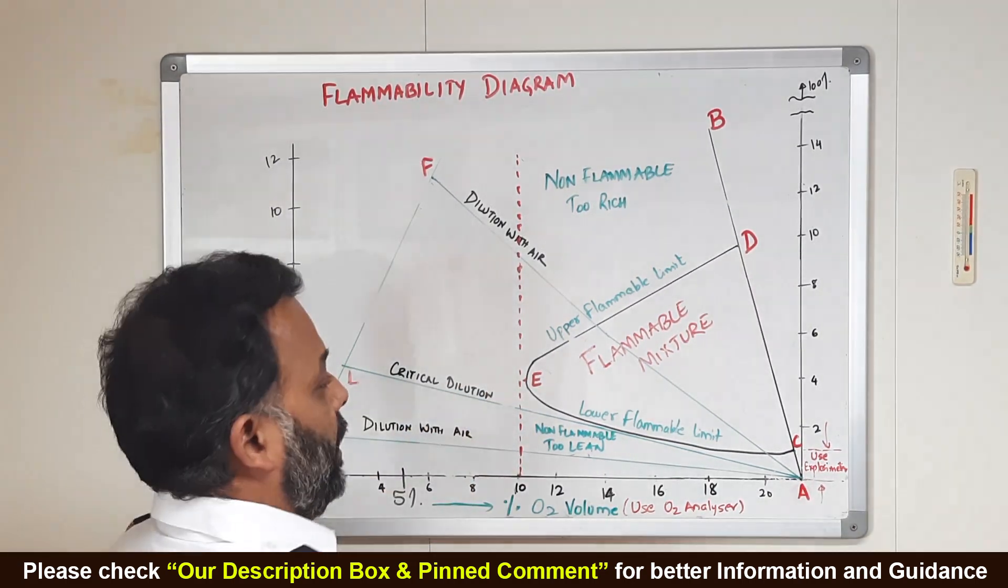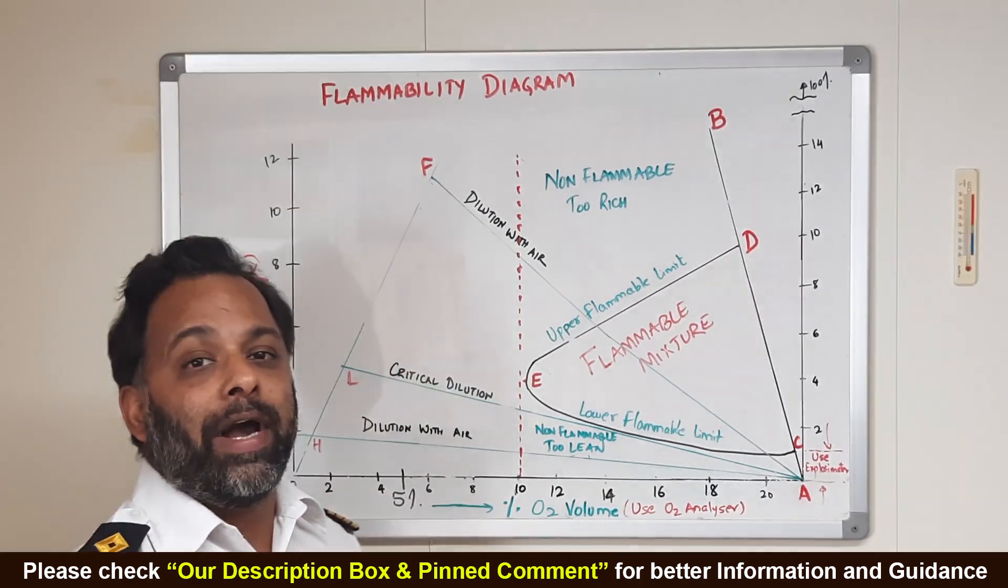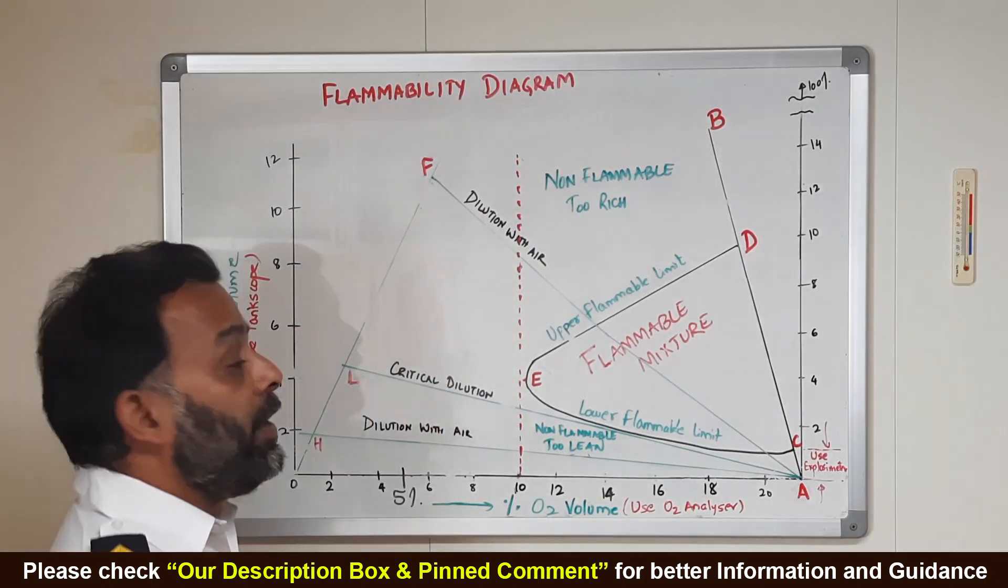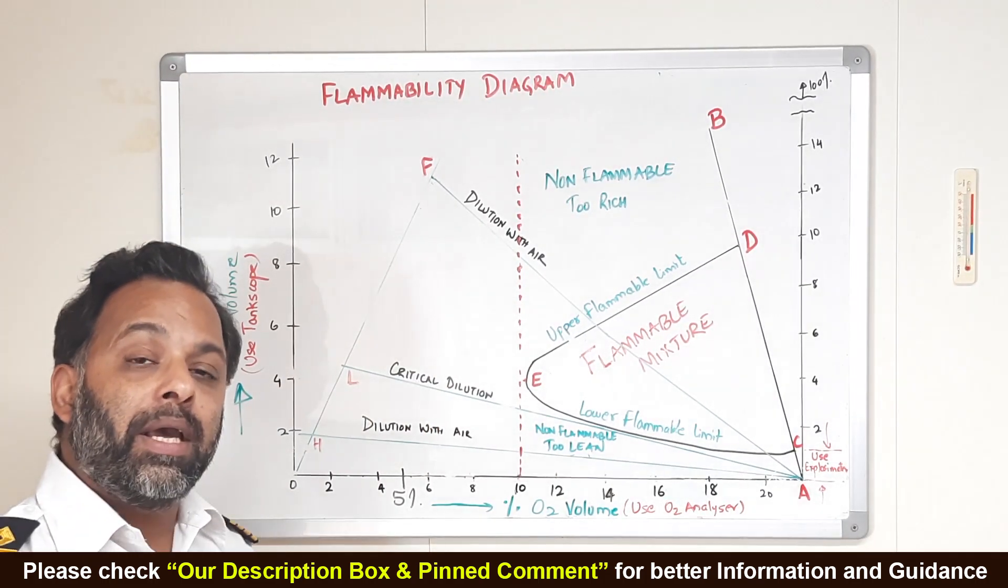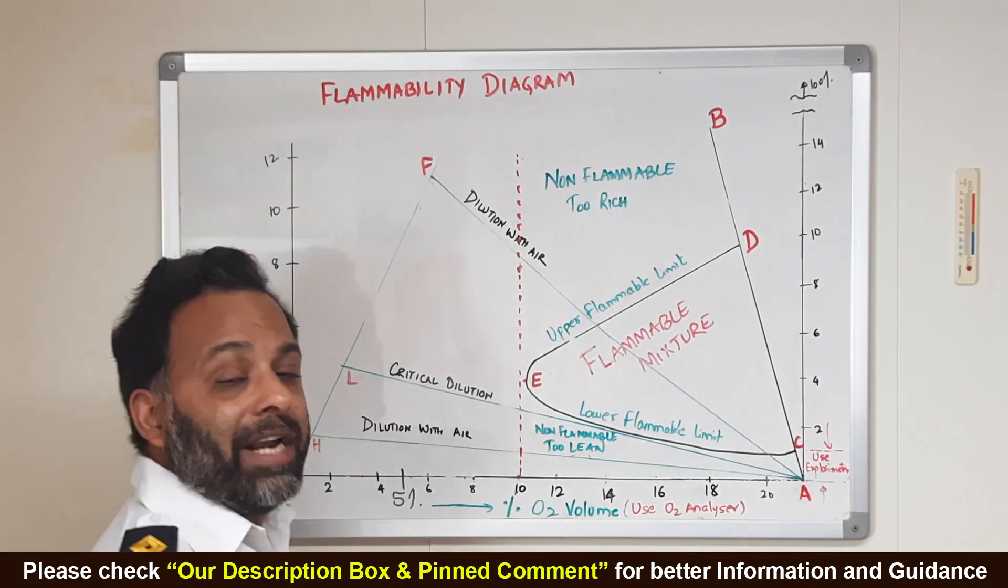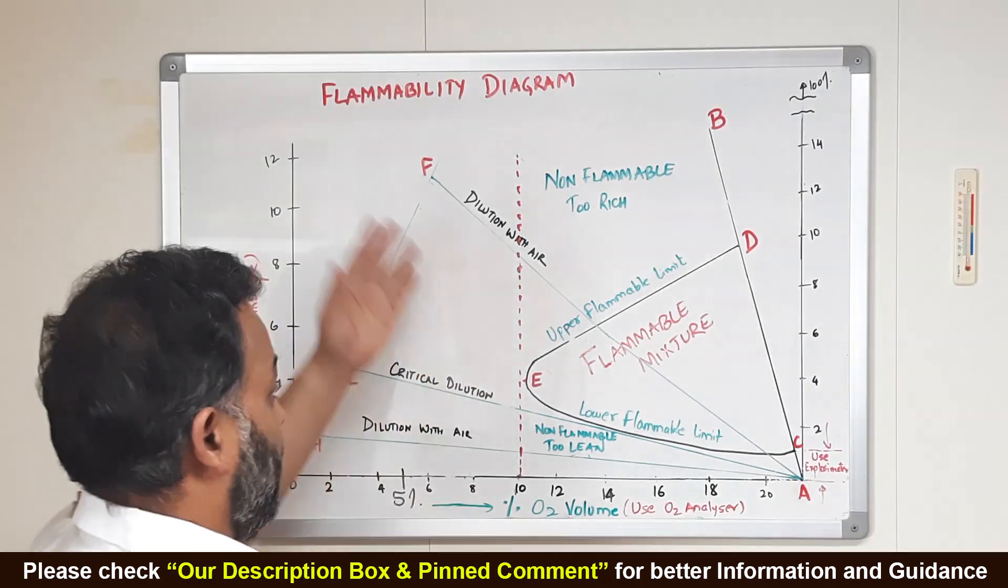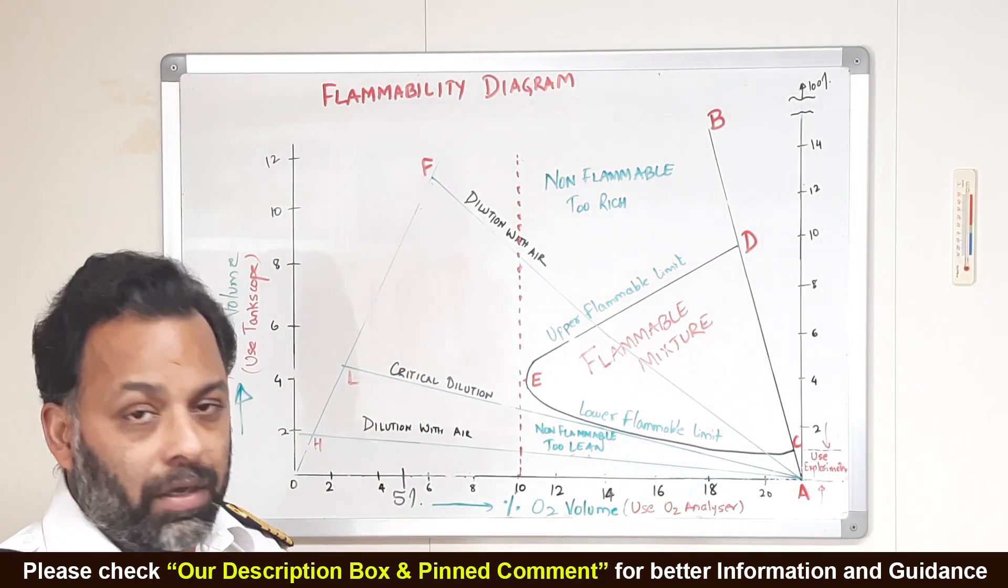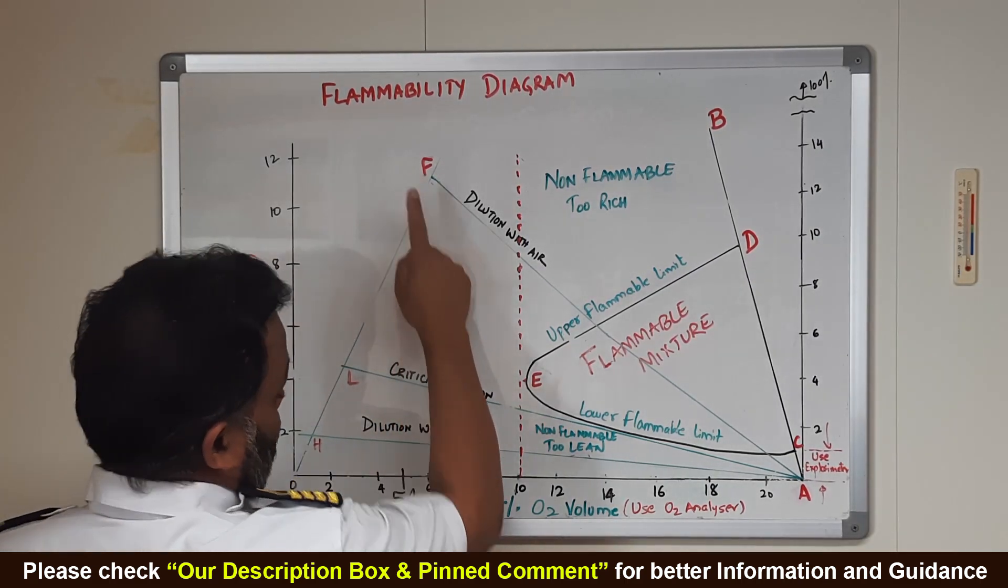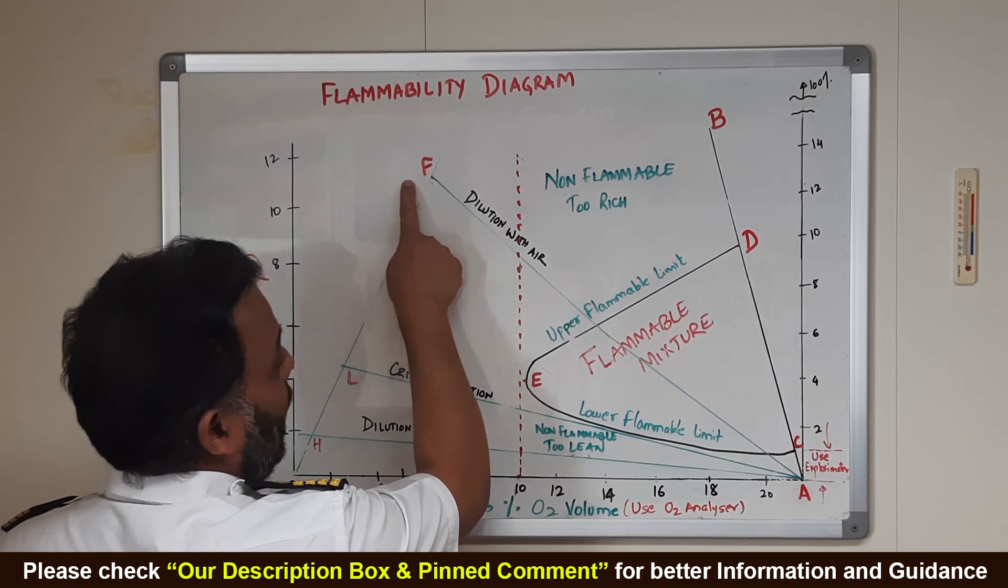Now, once we have the mixture less than 5%, no fire will take place. As we discharge our cargo at discharge port, we keep on pumping inert gas into the system. Suppose, let's suppose that we do not pump the inert gas into the system during discharging and, of course, when we discharge, if you are not pumping inert gas, then air will get into the system.